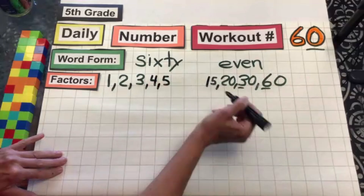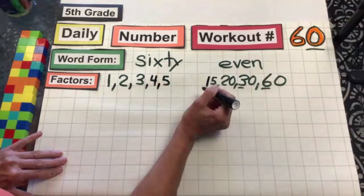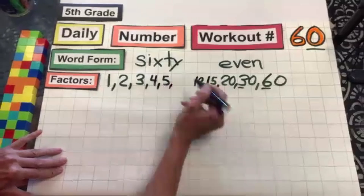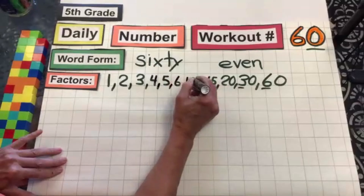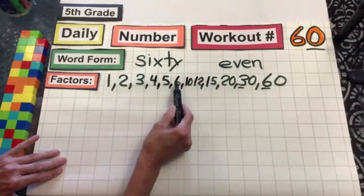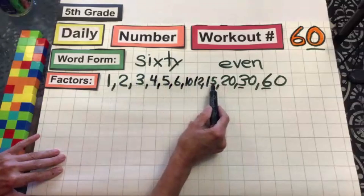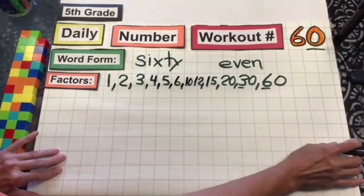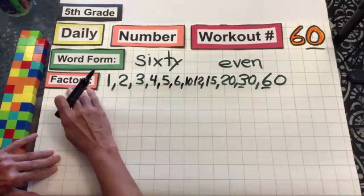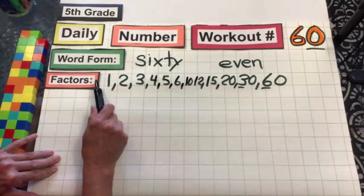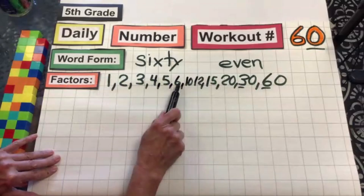5, 6, 10, 12, 15, 20, 30, 60. All those are multiples or factors of 60. That's a lot. Let's see how many we have — we have six factor pairs.